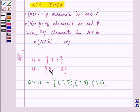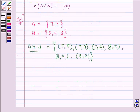And then (8,5), (8,4), and (8,2). So these are the six ordered pairs in G cross H.